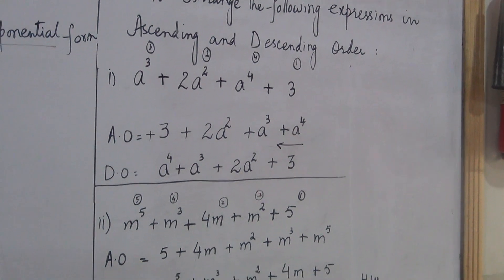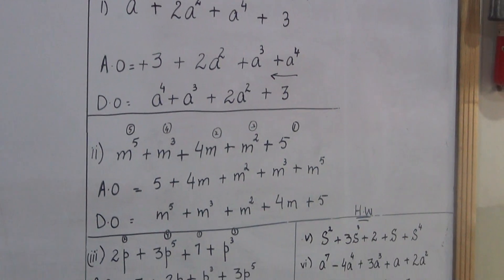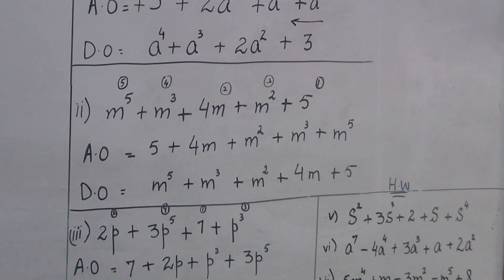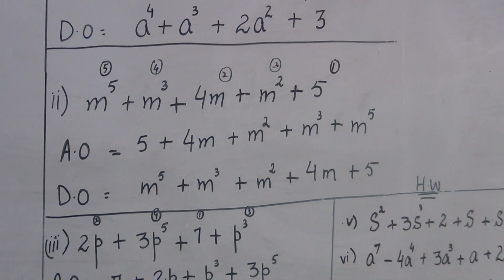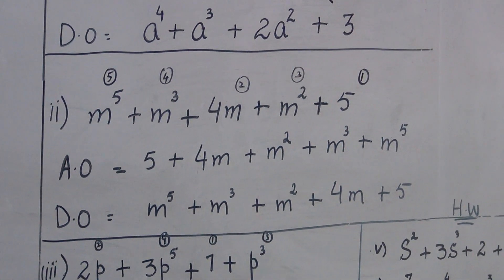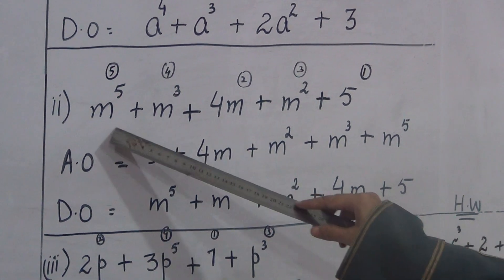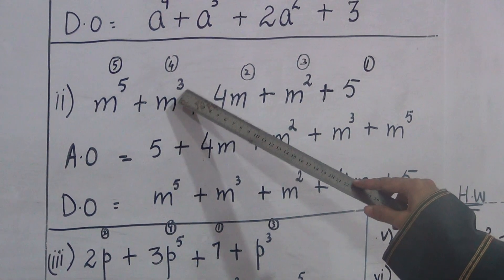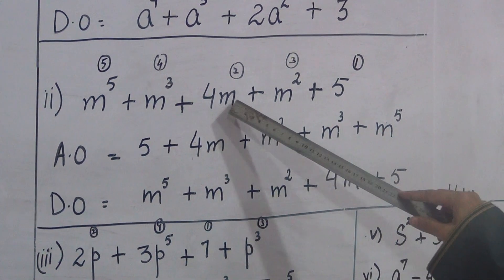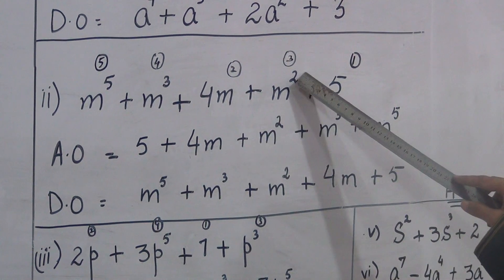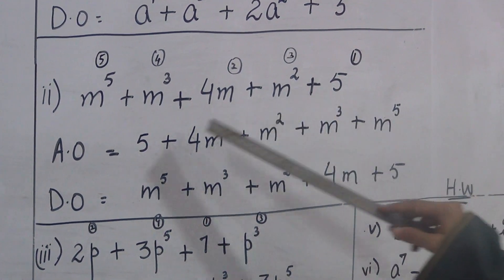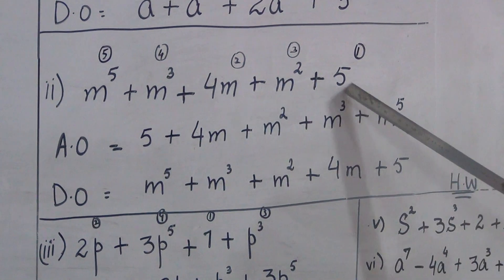Today we will continue this exercise. Question number 2 is: m raised to the power 5, m cubed — if we have power 3, we call it cube — then 4m plus m squared — if the power is 2 we say squared — plus y. This is an algebraic expression.